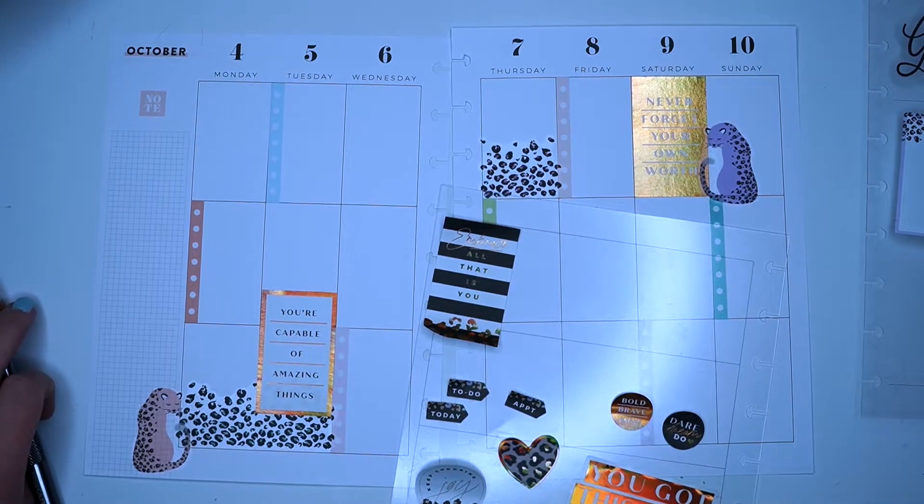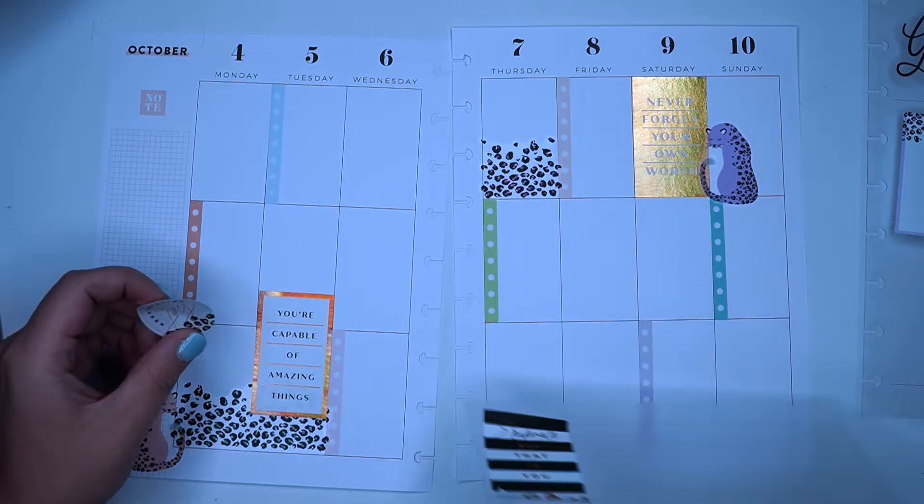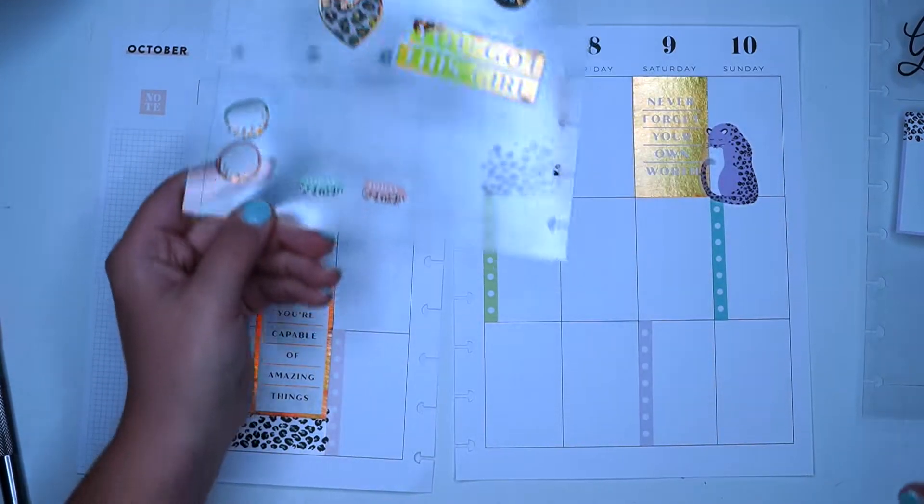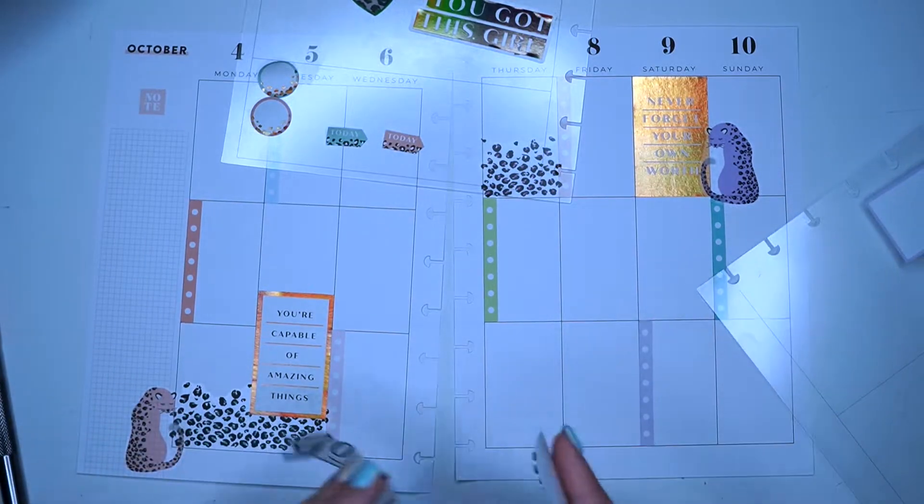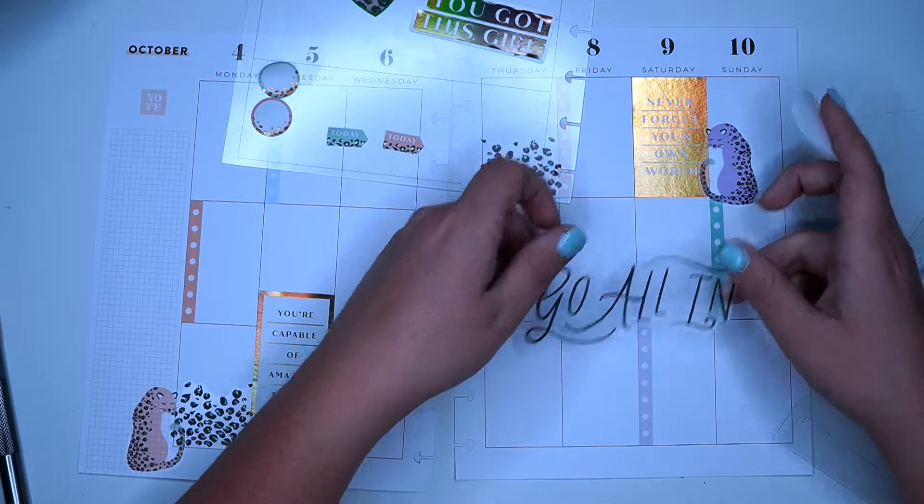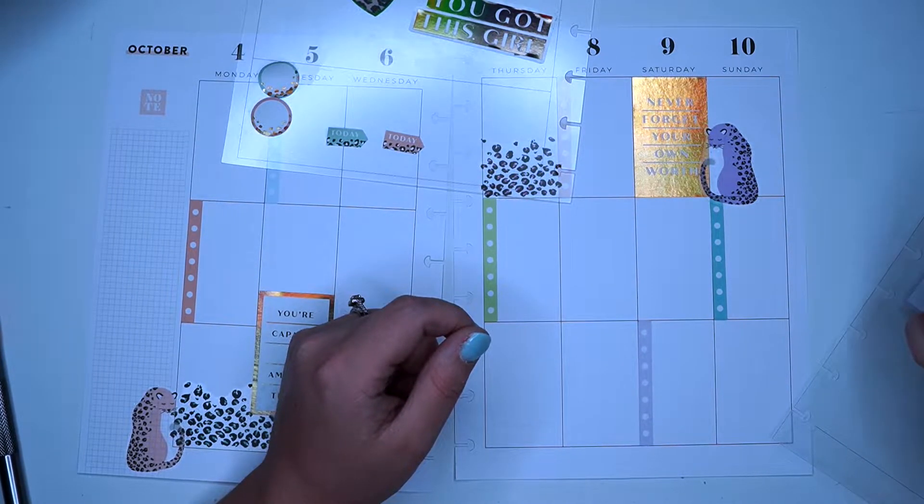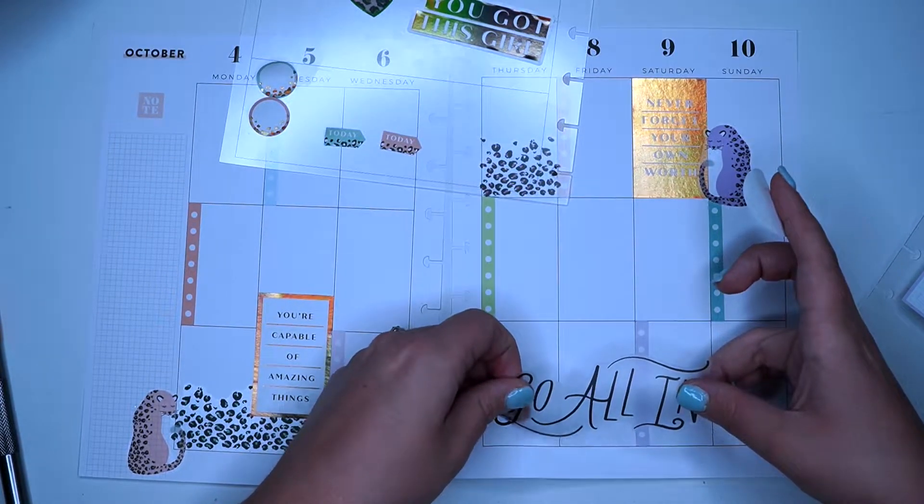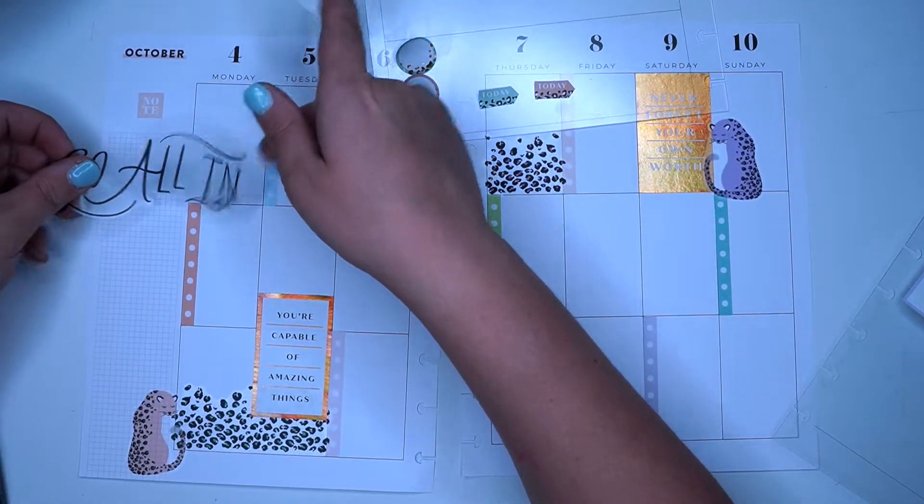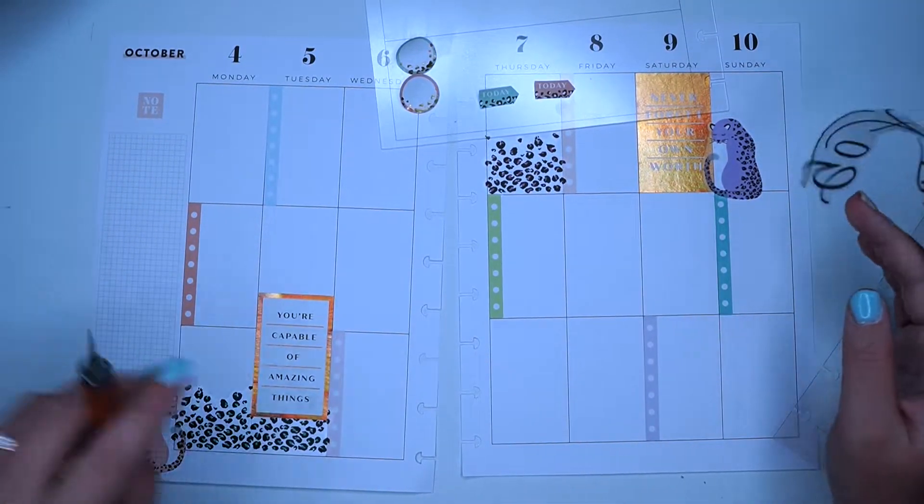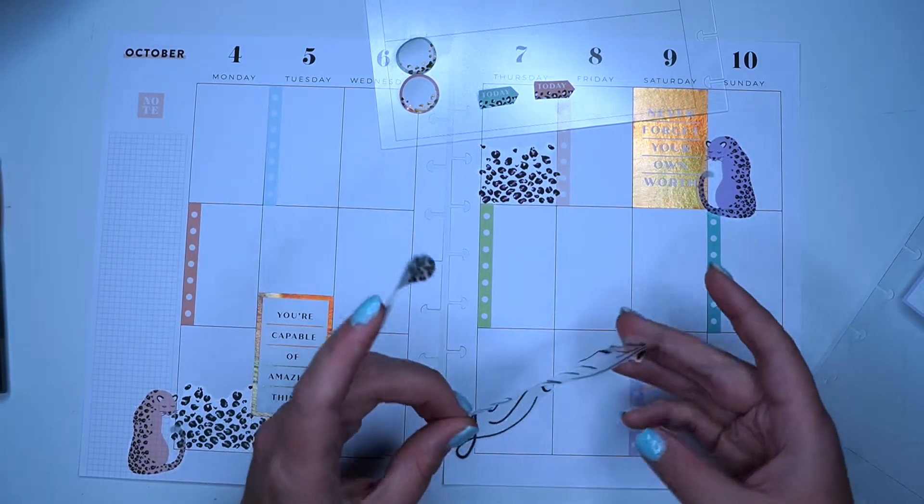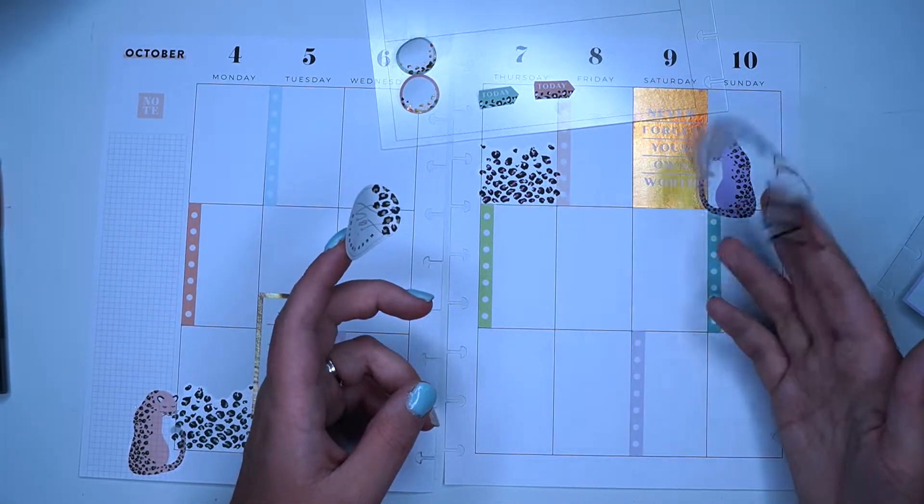Keep choosing joy. I think I'm going to put... I'm struggling because I grabbed a lot of stickers. How many boxes does this take up? Three whole boxes? And it won't fit right there unless I cut it, but I don't want to cut it. I really like this quote for this week.